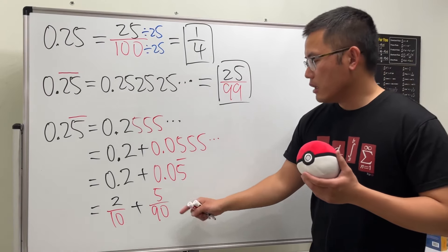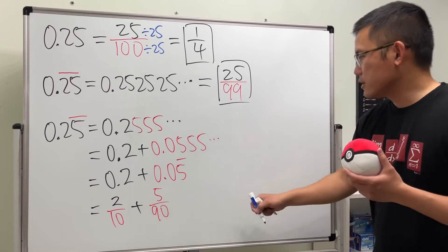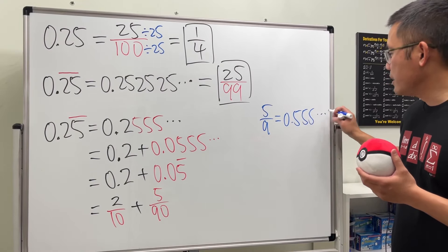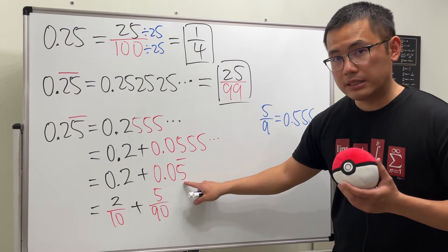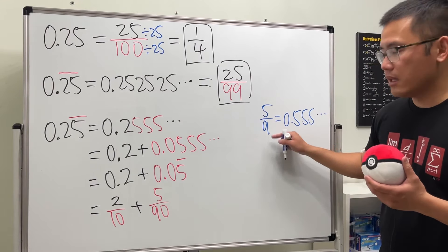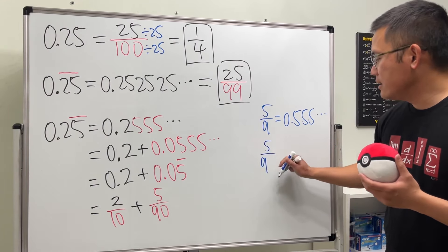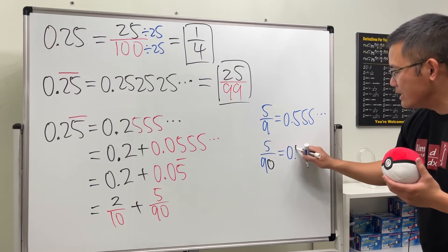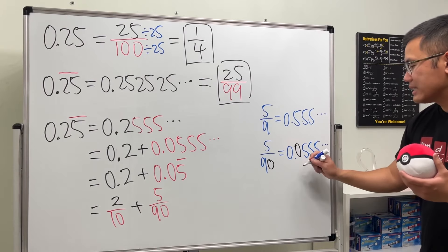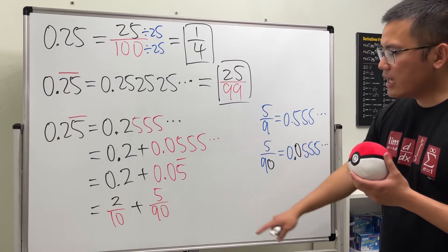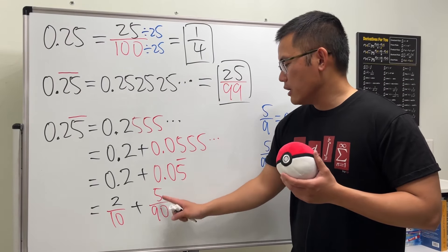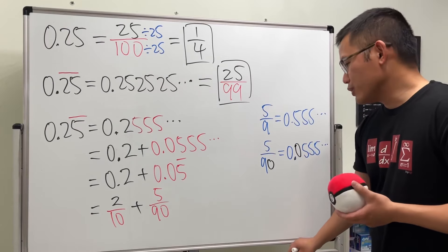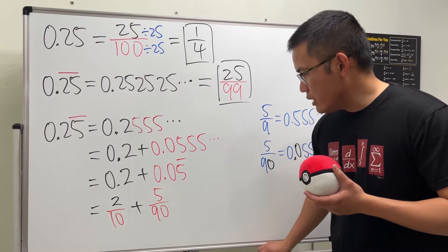Here's the reason: 5 divided by 9 gives you 0.555 repeating, but this 5 is in the hundredths place, so we divide by 10 as well — giving us 5 over 90. With that extra zero in the denominator, you get 0.0555 repeating. So you put the repeating digit on top and one 9 plus one zero in the denominator.